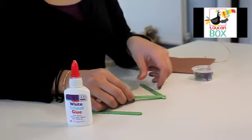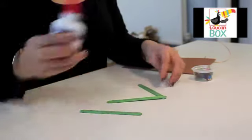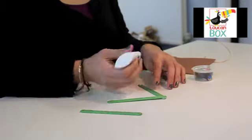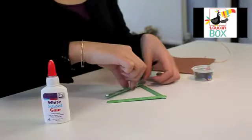You're going to glue the 3 sticks together into a triangle formation, making your tree. Once your shape is made, set it on the side to dry.